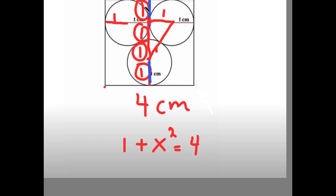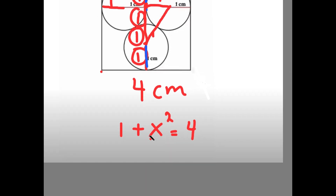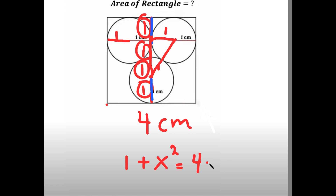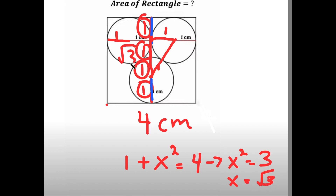So if one plus x squared equals four, then x squared equals three, and x equals the square root of three. This means the length of the left-hand side is the square root of three.